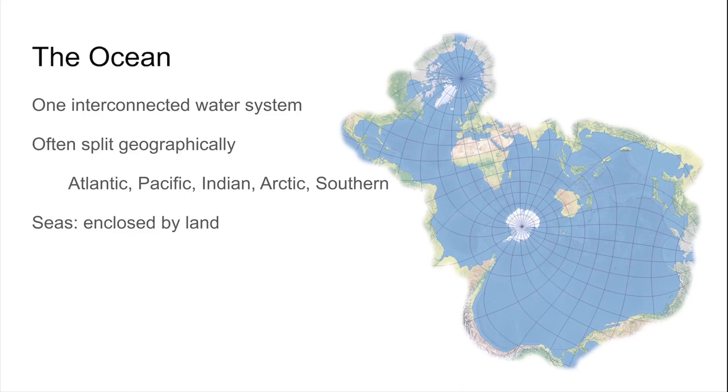Today we're going to talk about the oceans, which is one interconnected water system. Although, typically, we geographically divide up the oceans into the Atlantic, which is to the east and north of the Americas. The Pacific, which is to the west of the Americas.